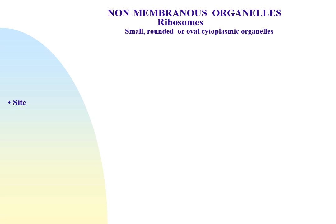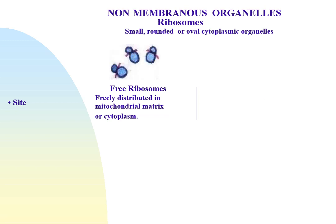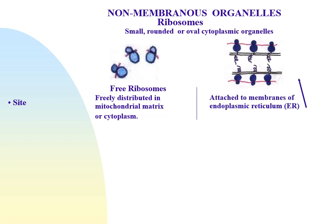Non-membranous organelles: ribosomes. Ribosomes are small rounded or oval cytoplasmic organelles. Ribosomes may be freely distributed in the mitochondrial matrix or cytoplasm, as in the case of free ribosomes, or attached to membranes of the endoplasmic reticulum and outer nuclear membrane, as in attached ribosomes.